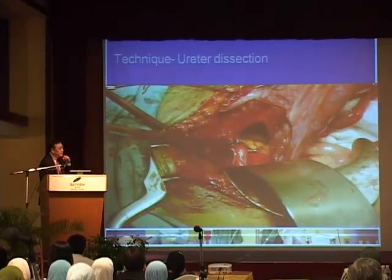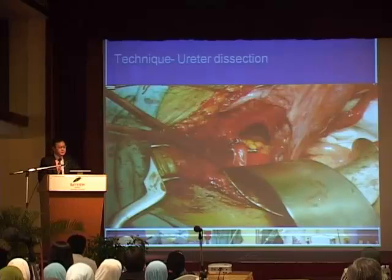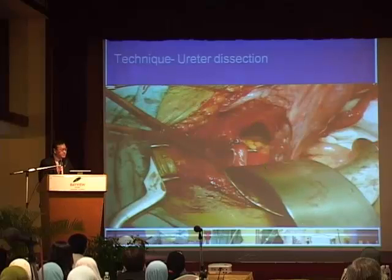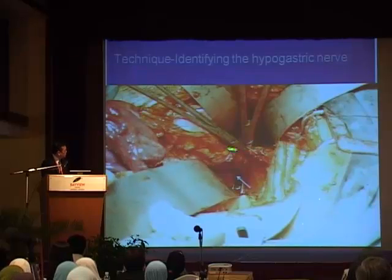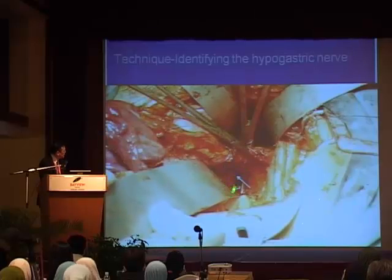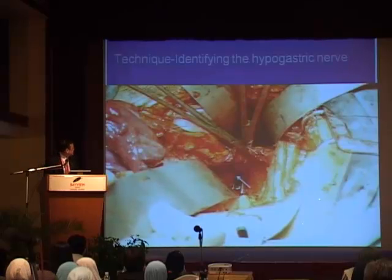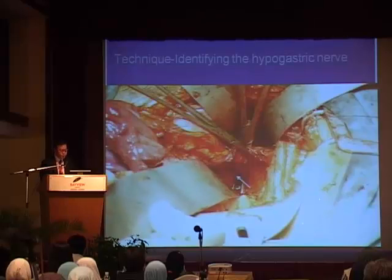Later on, we find the uterine vessels and ligate the uterine artery at its origin. As a result, we dissected the whole parametrium out, going posteriorly, identified the hypogastric nerve in the Okabayashi space, and thereby dissected the lateral parametrium — and you can actually see the vascular component as well as the nervous component. You can see one of the nerves going through, and the hypogastric nerve, which is immediately lateral to the uterosacral ligament.